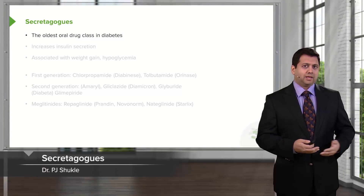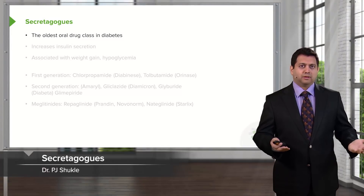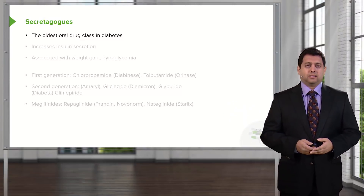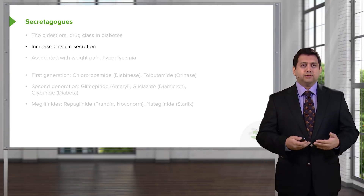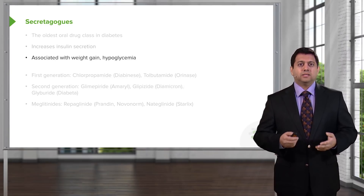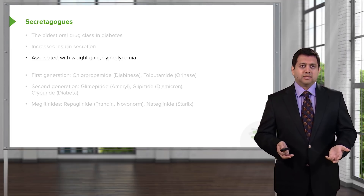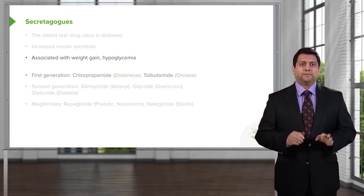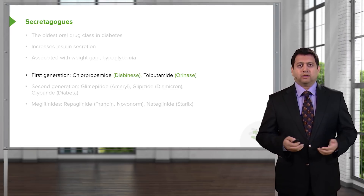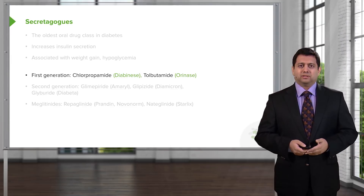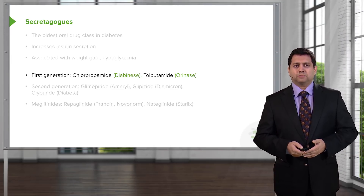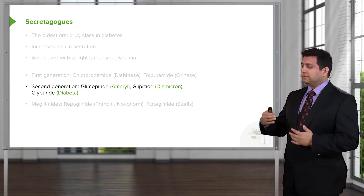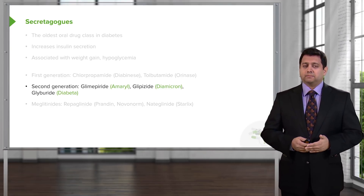The first of the oral medications that I want to talk about are the secretagogues. Secretagogues are the oldest oral class in diabetes. They increase insulin secretion. They are associated with weight gain and hypoglycemia, however, so there are some downsides to this particular medication. The first-generation secretagogues really aren't used anymore, and I don't really encourage you to learn too much about them. The second-generation secretagogues are going to be the ones that you will be asked about on your exams, so it's important to know or at least recognize these names.